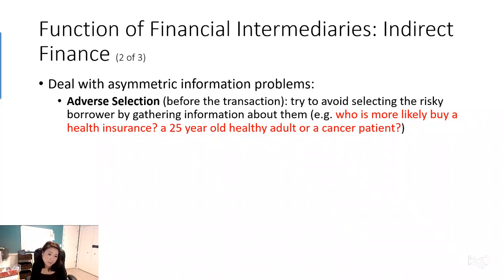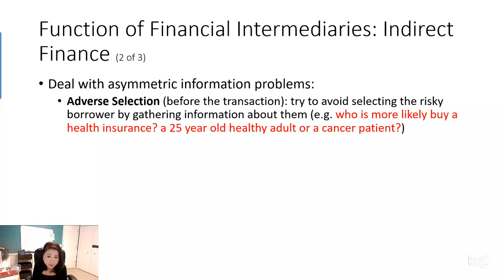To illustrate adverse selection, consider: who is more likely to buy health insurance — a healthy 25-year-old adult, or a cancer patient who hasn't mentioned they have cancer? The answer is obvious: the cancer patient is more likely to buy health insurance. The same applies to financial intermediaries. Before borrowers take out a loan, they already know the risks they face and how likely they are to succeed. The intermediary has no idea before investigation whether the borrower will repay the money. So people who are more likely to default on their loan are more likely to borrow money — that is adverse selection.